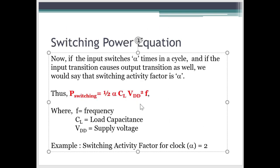So now this is the switching power equation. We know that half Clvdd square is the energy and alpha is the switching factor. If input switches alpha times in a cycle then alpha will be switching factor. Remember that for switching power not only change in the input is important but that change in input should also lead to change in output. So our equation for switching power will be Pswitching = 1/2 alpha CL VDD^2 f, where f is frequency.